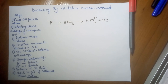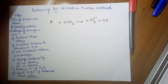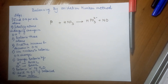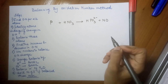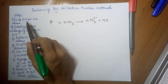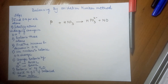Hello kids, we will again be doing the balancing of redox reactions by the oxidation number method. This is the second example — the second video — to give you a better understanding of the concept. A quick review of the steps: first, you have to find the oxidation number for all the atoms.